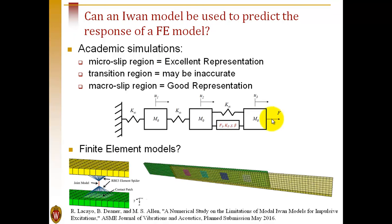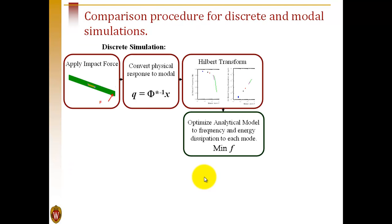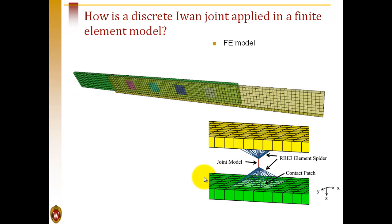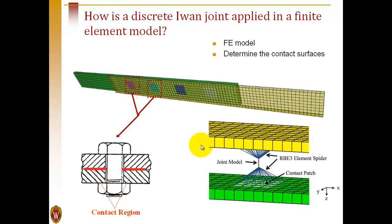We've shown how this works for a simple spring mass system. What about a more realistic structure, such as a finite element model with two beams bolted together? The procedure was the same as we used before. We take this finite element model and apply discrete IWAN joints between each of the bolted interfaces in the structure. To simplify the model, we're treating those as square patches, so we can use a coarser mesh. Each patch is connected to a single point, and then that point is connected between top beam and bottom beam using discrete IWAN model.